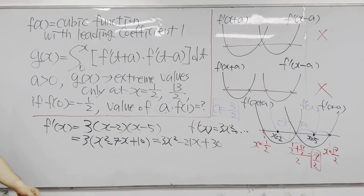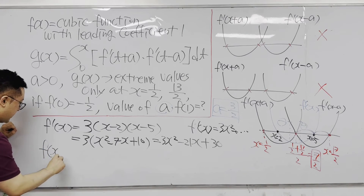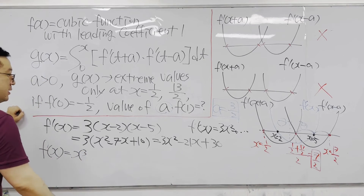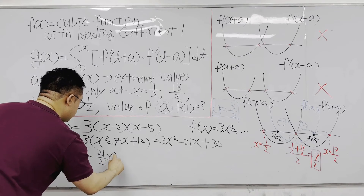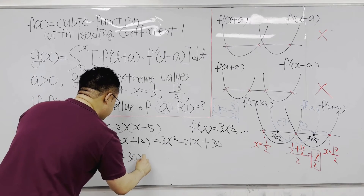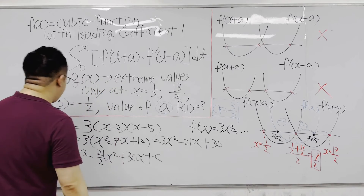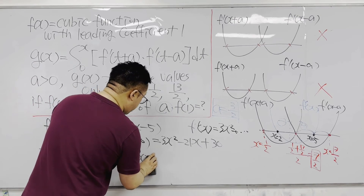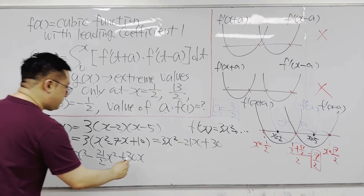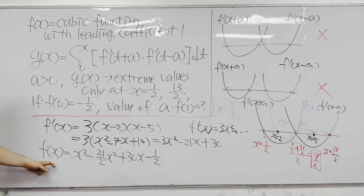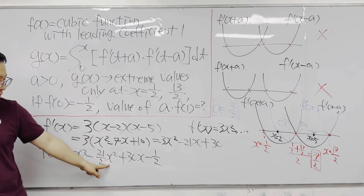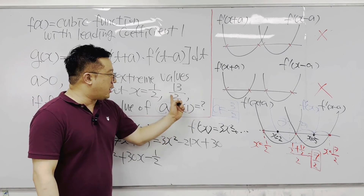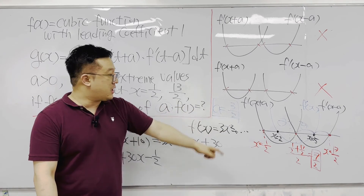f'(x) = 3x² − 21x + 30, so f(x) is its antiderivative: f(x) = x³ − (21/2)x² + 30x + C. Using the condition f(0) = −1/2, we get C = −1/2. So f(x) = x³ − (21/2)x² + 30x − 1/2. All we need is the value of f(1), which we multiply by a = 3/2 to get the answer.